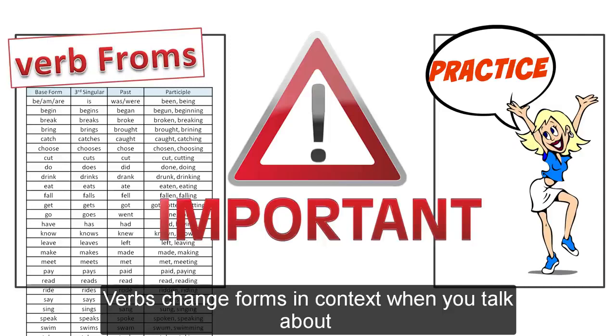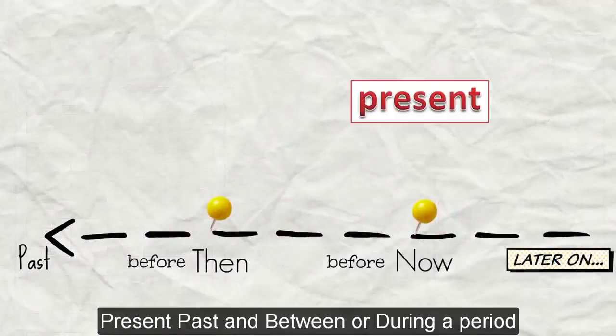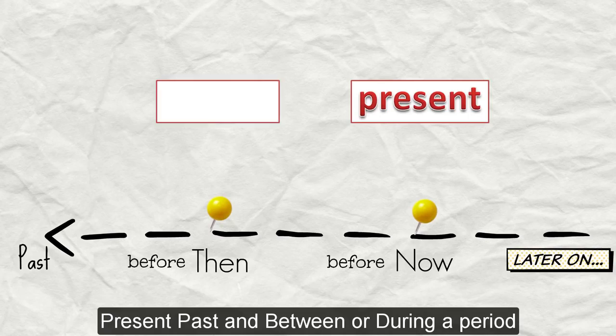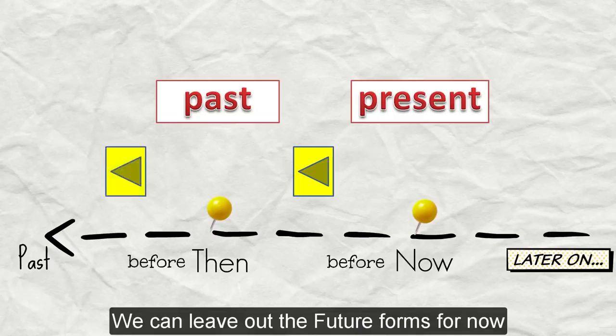Verbs change forms in context. When you talk about present, past, and between or during a period of time, we can leave out the future forms for now.